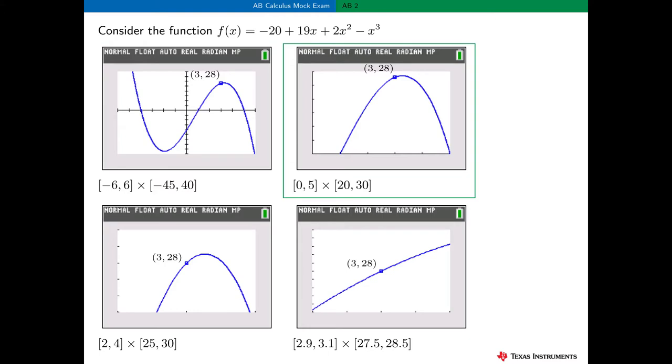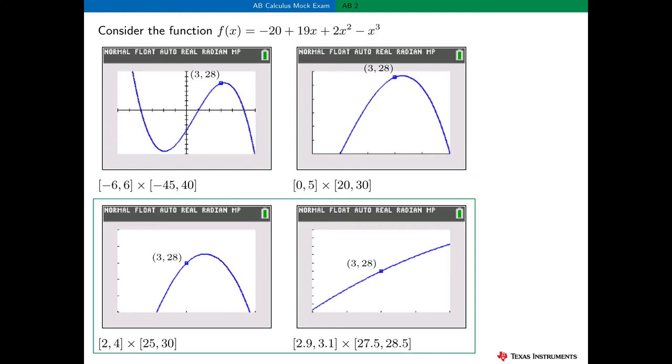Let's start to zoom in near this point (3, 28). Here's the viewing window 0 to 5 by 20 to 30. The graph here is beginning to look a little more linear. As we continue to zoom in, the graph of f looks more and more like a straight line. In fact, it looks more and more like the graph of the tangent line to the graph of f at x = 3. And this observation is the basis for a method of finding approximate values of functions.